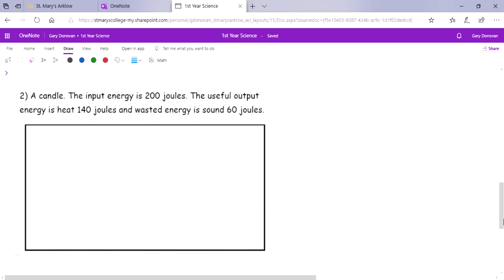So now we have a candle, and the input energy is 200 joules. The useful energy is 140, and the wasted energy sound is 60 joules. Well, let's try and stick to having 10 boxes. So let's say our input energy is 10 boxes, and that's 200 joules. That means one box would be 200 divided by 10 is 20 joules. So I'll count out 10 boxes again.